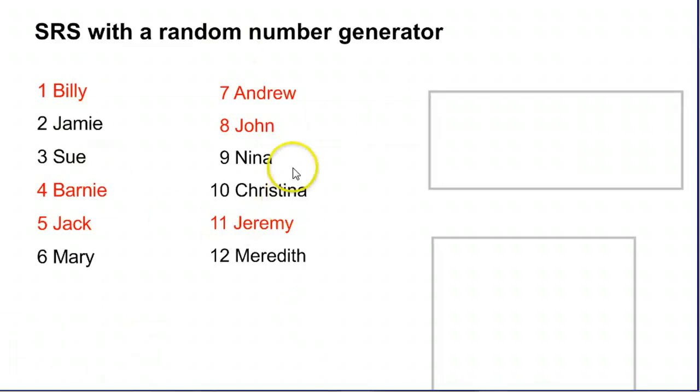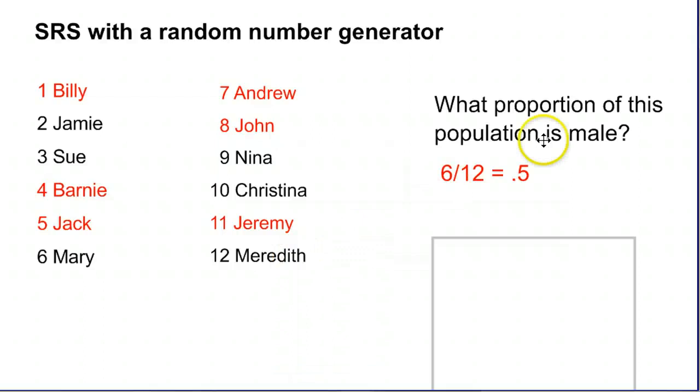Let's look at the same list here and try to figure out what percentage, what proportion, is male. I highlighted all the males in red and then all the females here are in black. And if you count them up, 1, 2, 3, 4, 5, 6, and then 6 females. So 0.5, 6 out of 12, 0.5 of the population, this is my entire population here, is male. 6 divided by 12 equals 0.5.